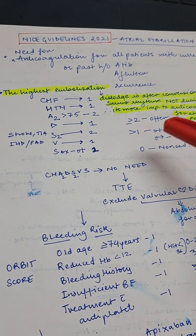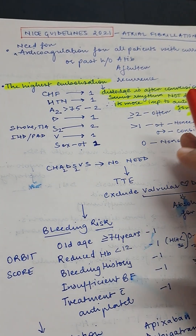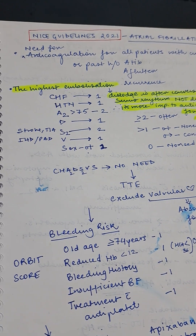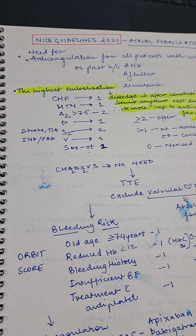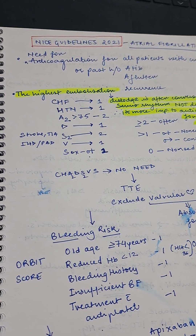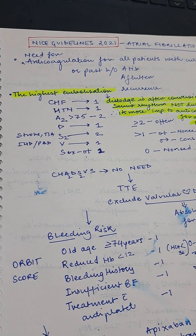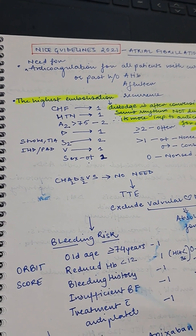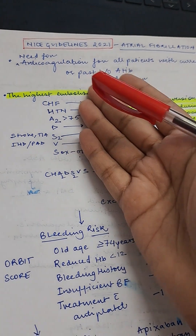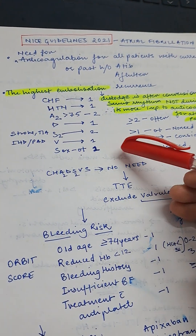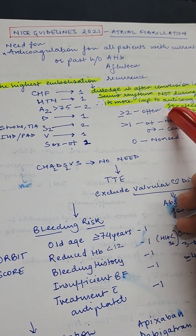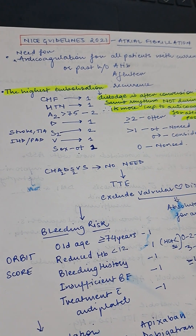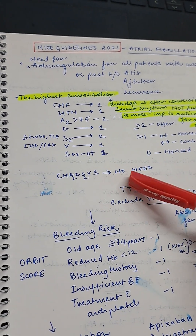When reading an exam question, you don't need to sit with a pen to calculate the score. For example, '75-year-old female with history of stroke and diabetes' — in those first few words alone, the score is already two or more, so you can calculate it immediately while reading.